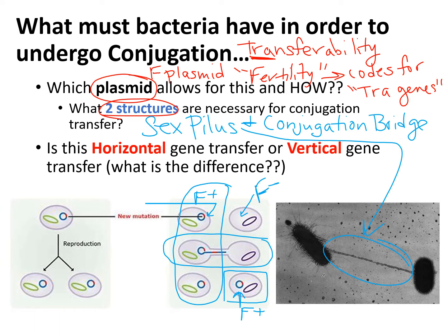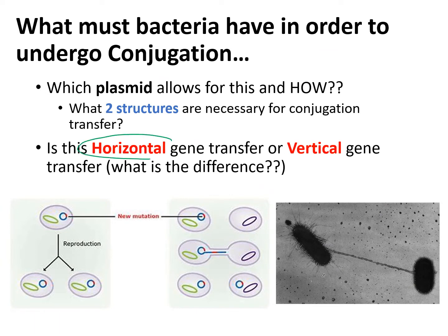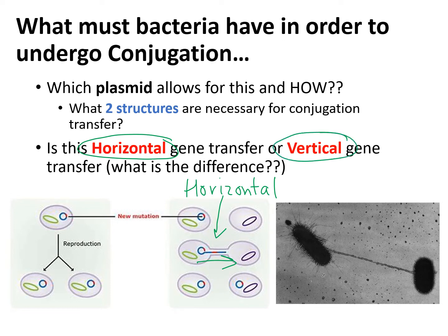This type of gene transfer is called horizontal gene transfer. Looking at the figure, horizontal gene transfer for conjugation shows transfer from left to right. Horizontal gene transfer means you are transferring DNA from two organisms, usually in a sexual reproduction manner, but they are not related organisms. Whereas vertical gene transfer is the transfer of genes from a parent to offspring.